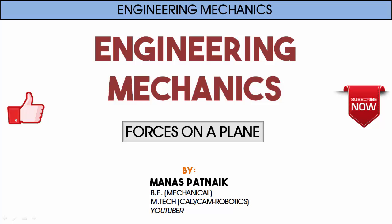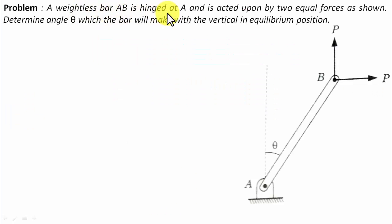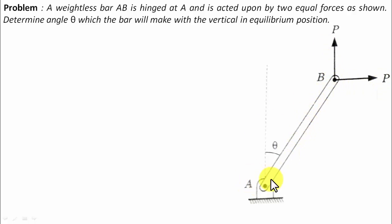Hi there guys, hope you're doing well. This is your friend and tutor Manas. A weightless bar AB is hinged at A and is acted upon by two equal forces as shown — one in the horizontal direction, the other in the vertical direction. This bar AB is hinged at A.